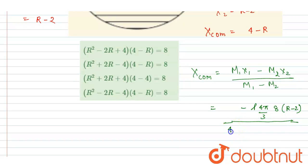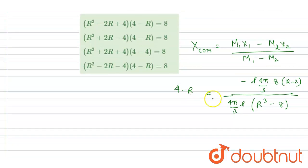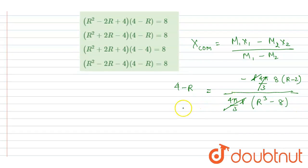For m1 minus m2, taking out the common factor (4π/3)·rho, we get r cubed minus 8. This equals the center of mass coordinate, which we already know: since the center of mass is at the surface of the cavity, it is at a distance of 4 minus r. Cancel out the (4π/3)·rho terms and you get the equation.